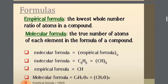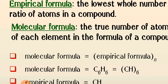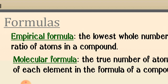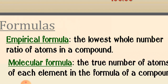Now let's discuss the next topic — empirical formula and molecular formula. The empirical formula is the lowest whole number ratio of atoms in a compound. This formula tells us only the whole number ratio of atoms. It does not tell us the exact number of each different atom — only the ratio between them.